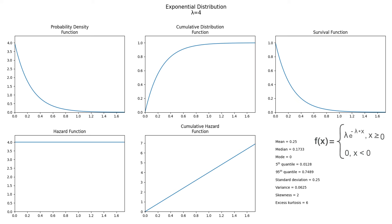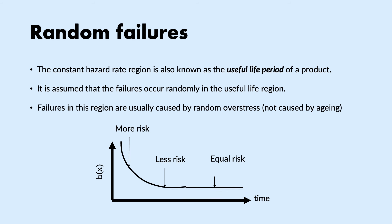If the log normal distribution models equipment in burning periods, the exponential distribution is useful for random failures where the risk is always the same. Regardless of the lambda parameter selected, the exponential distribution has a constant hazard function, meaning the conditional probability of failing at any given moment is always the same. The random failure period usually occurs after the infant mortality period, and failures occur more or less randomly caused by overstress, not necessarily by the age of the equipment.